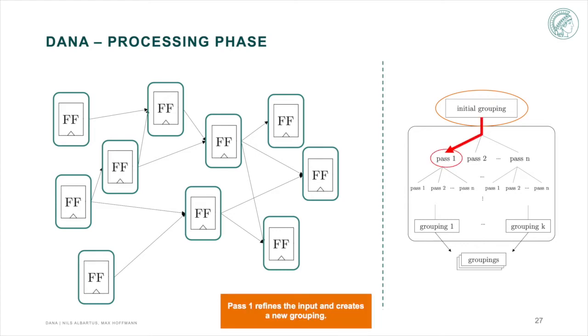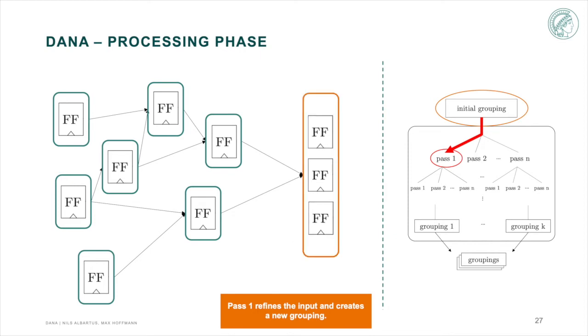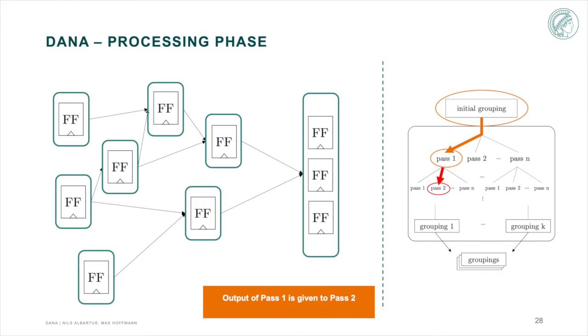Pass 1 may now recognize that these flip-flops belong together and create a register of these three flip-flops based on its internal metric. The output of pass 1 is given to pass 2. Pass 2 now creates new registers based on the output of pass 1, again depending on its own internal metric.